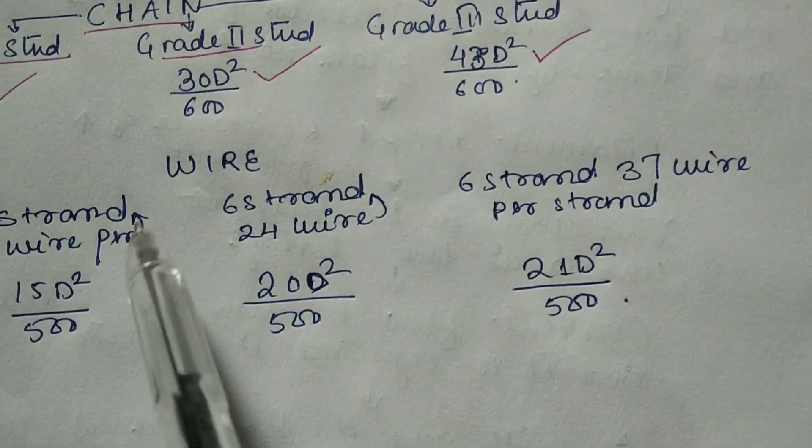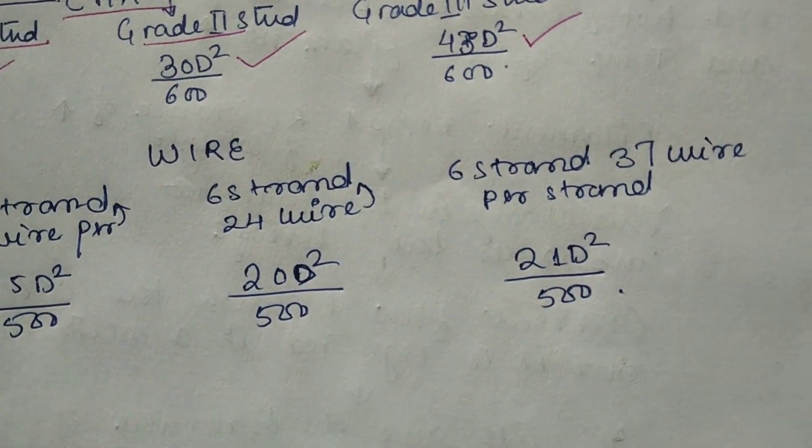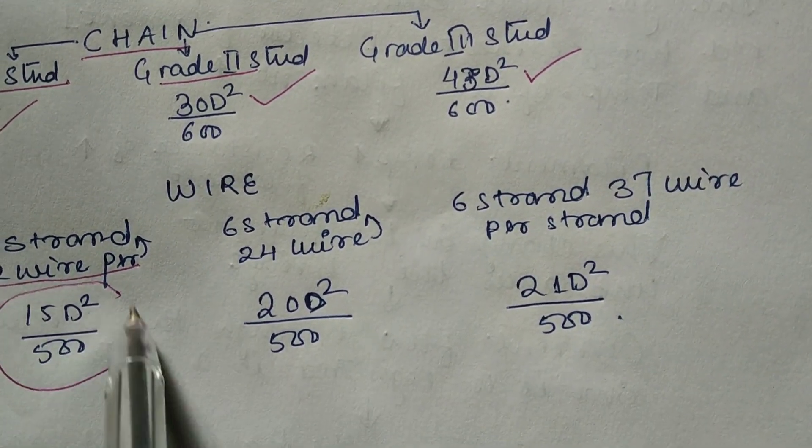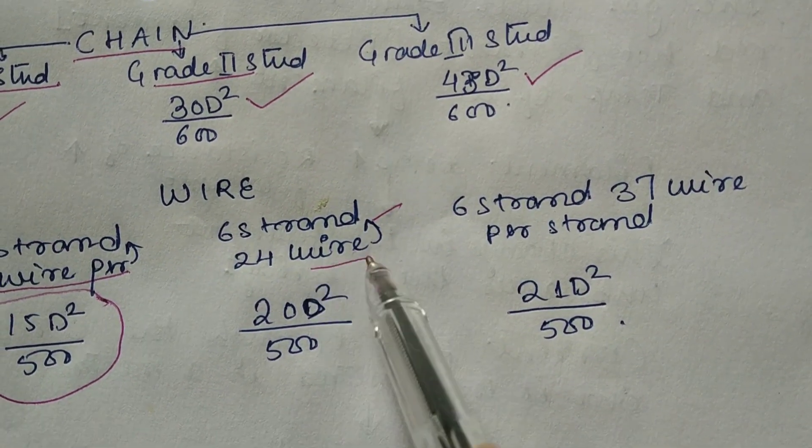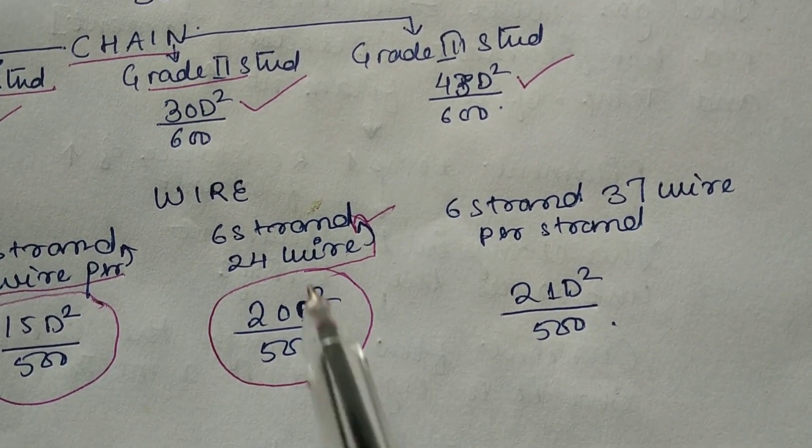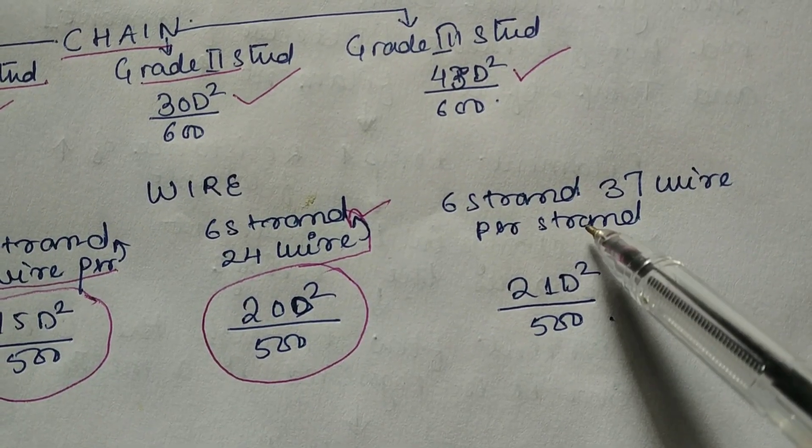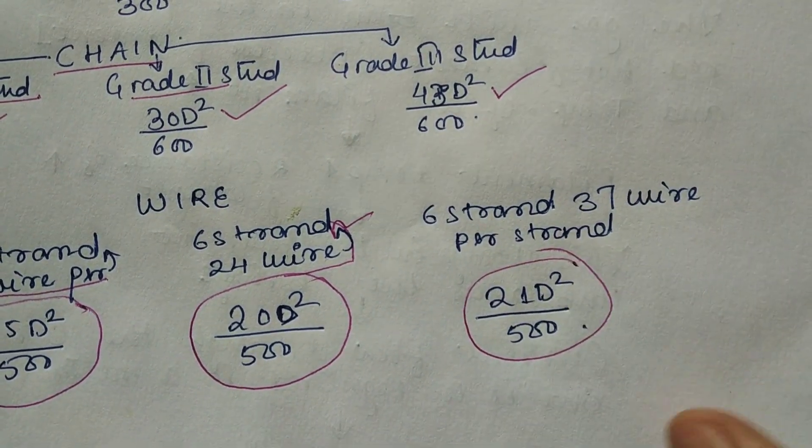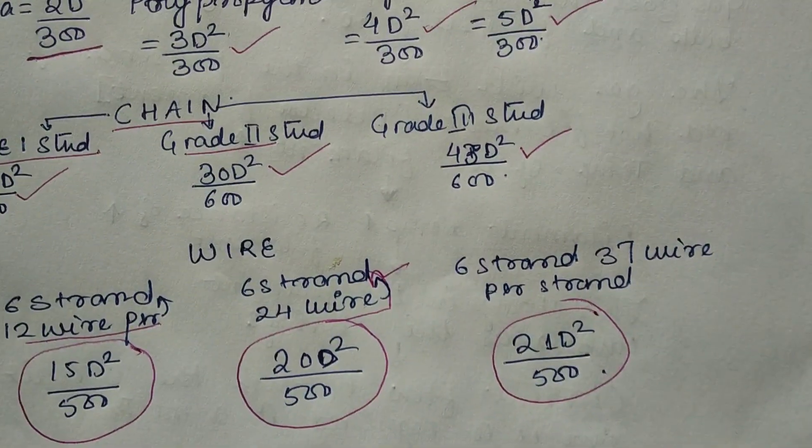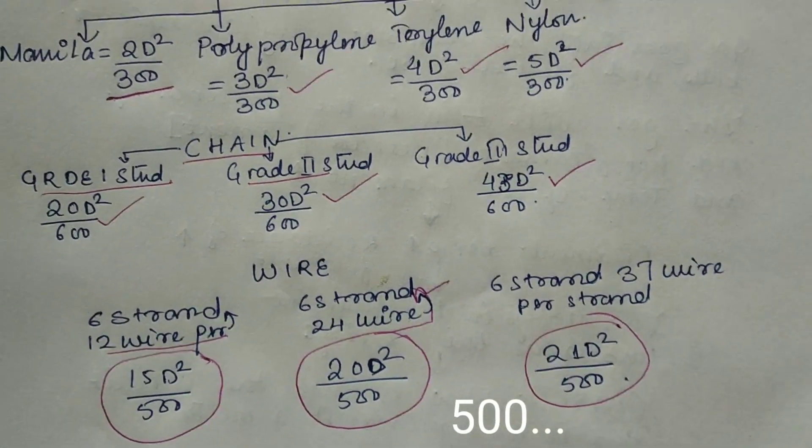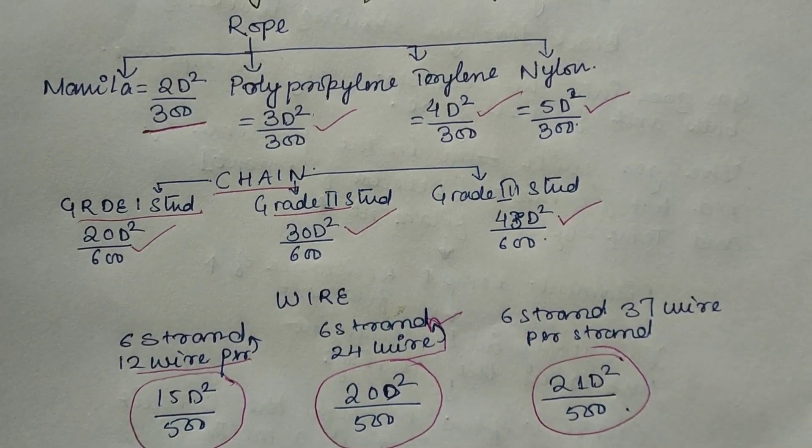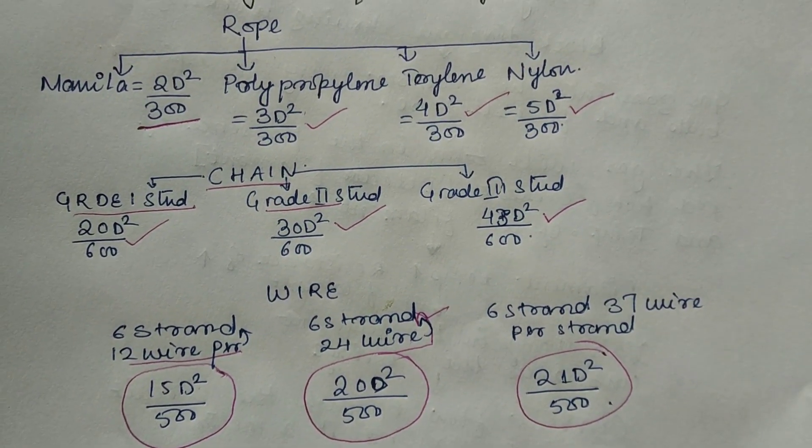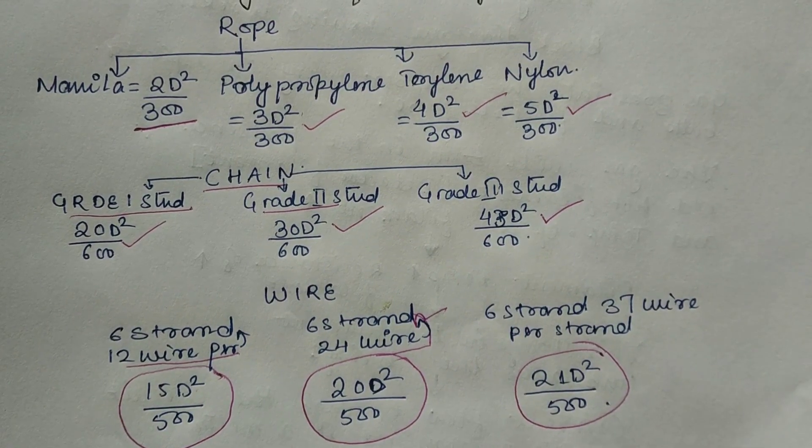For wires: 6 strand with 12 wire per strand is 15D²/500, and 6 strand with 24 wire per strand is 21D²/300. These are the basic formulas to find the breaking strength of different types of rope, chain, and wire. You need to remember all these formulas.